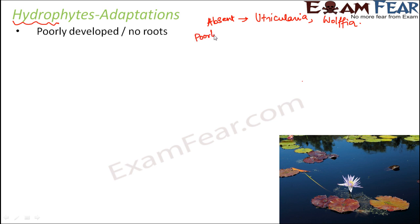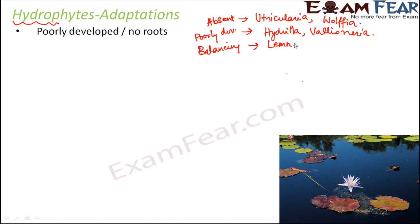For hydrophytes where roots are used only for the purpose of balancing, examples would be Lemna, Pistia, and Eichornia. The reason these examples are important is because in your competitive exams, questions might come up where they give you an example like Pistia and ask you the type of roots it has, or give you a list of plants and ask in which of them roots are absent.